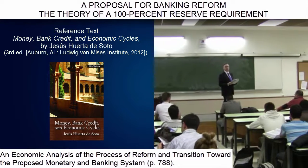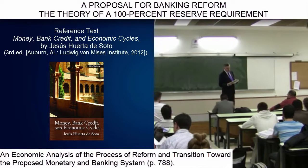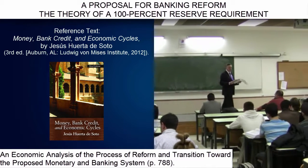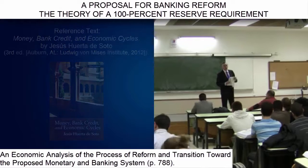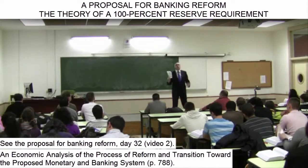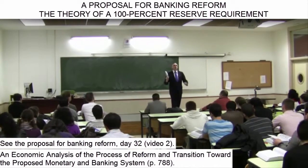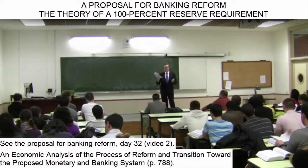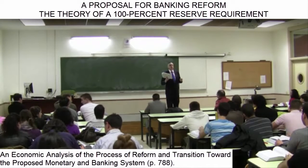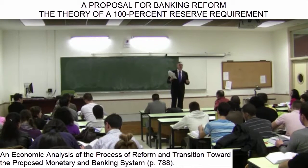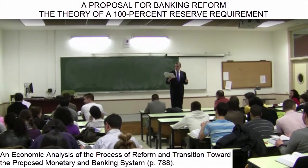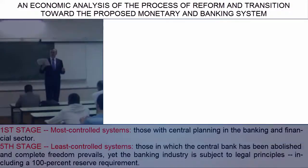Now we will wind up the book with Section 5 and an analysis of the reform process. Not only do I propose three fundamental measures to be adopted, but I also explain, from a political standpoint, how, at minimal cost, they could be adopted in five stages.